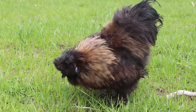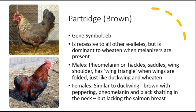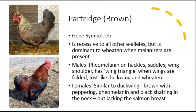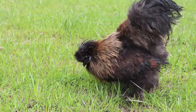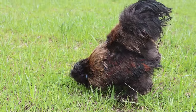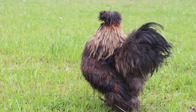The fifth and final E-Allele is what we call Partridge in America — though in some countries it is referred to as brown. It is the most recessive, so the gene symbol is a lowercase e superscript b. On males, the Partridge gene causes them to look nearly the same as Duckwing and Wheaten males, with a black tail, red hackle and saddle feathers, and a red wing triangle.